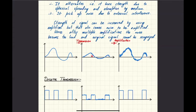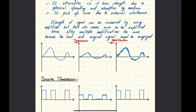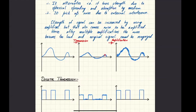This is called attenuation — loss of signal strength. Additionally, due to external interference, some unwanted random power would get added to the signal, making it no longer smooth after transmission. For example, if the signal is transmitted as an electrical signal in copper wire, then high-power cables in the surrounding region would interfere and cause random power to be added. This is called addition of noise — an unwanted random power added to the signal.